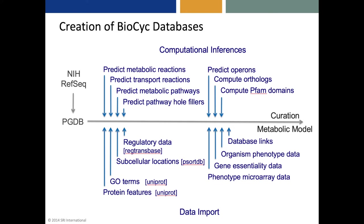How are the Tier 2 and Tier 3 databases created? That procedure starts with an annotated genome for the organism, such as in the form of a GenBank entry. Our PathwayTools software then converts the gene and protein information in the GenBank entry into the PGDB format. Next, we run several prediction components that predict the metabolic reactions, transport reactions, metabolic pathways, and pathway hole fillers.